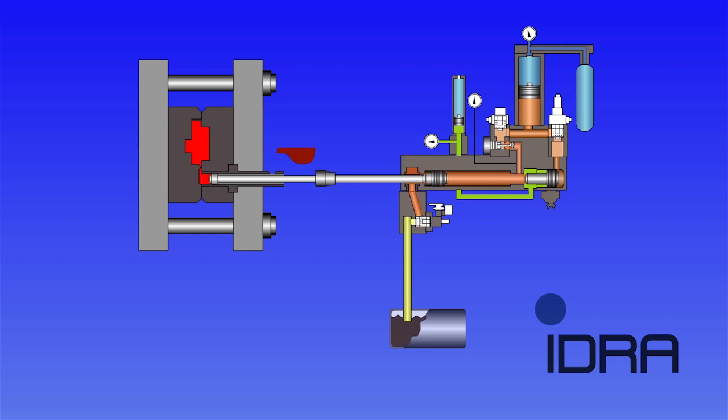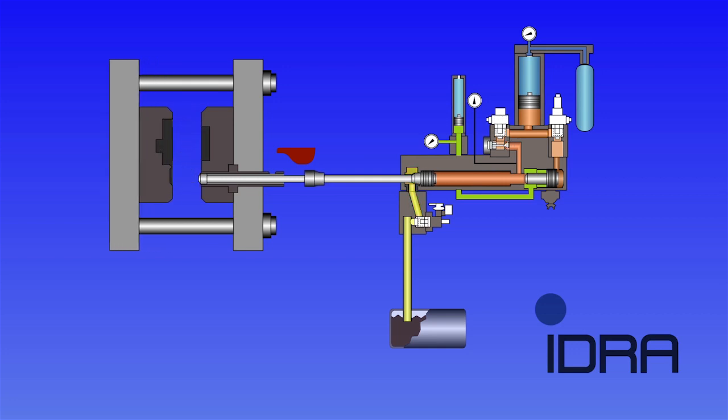To understand this injection system we need to look at the animation shown here. The injection is powered by a large capacity accumulator which is used to supply the entire stroke of the injection cylinder and the intensification.